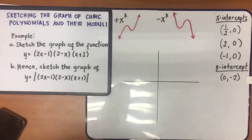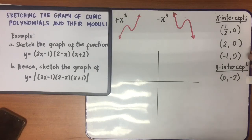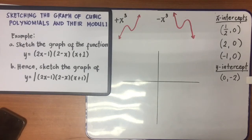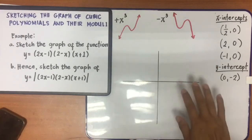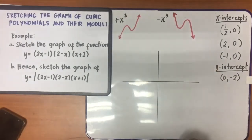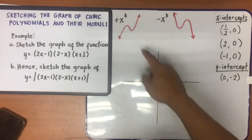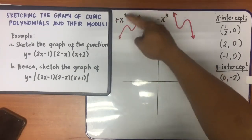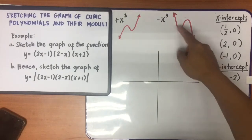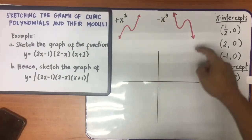If you notice, I have written the x-intercepts found earlier: (1/2, 0), (2, 0), (−1, 0), and the y-intercept (0, −2). We will sketch this graph using these two things. If the numerical coefficient of x³ is positive, the graph looks like one shape; if negative, it looks like the other shape.